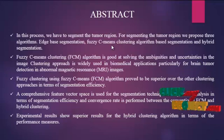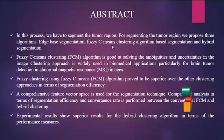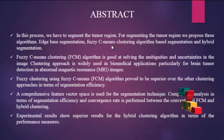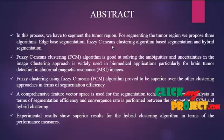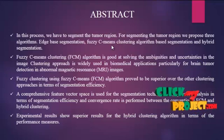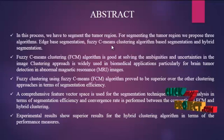These are the three types of segmentation in the process. In the fuzzy c-means clustering, the FCM algorithm is good at solving the ambiguities and uncertainties in the image clustering approach. It is widely used in biomedical applications, particularly for brain tumor detection in abnormal magnetic resonance images. Fuzzy clustering using c-means, the FCM algorithm, proved to be superior over other clustering approaches.